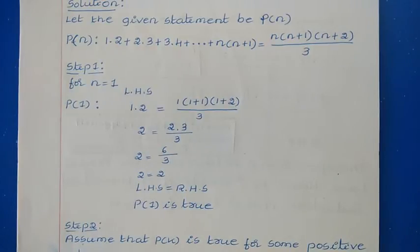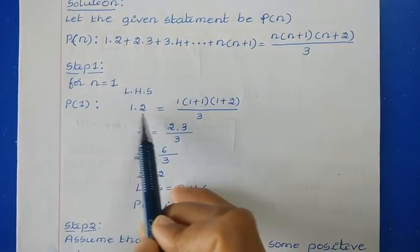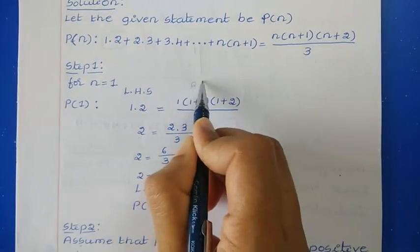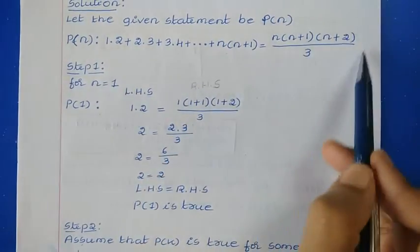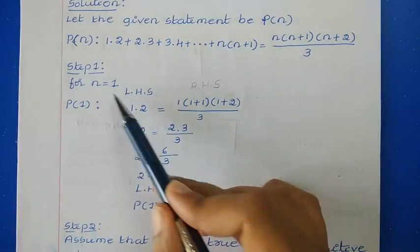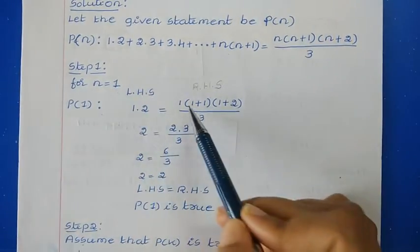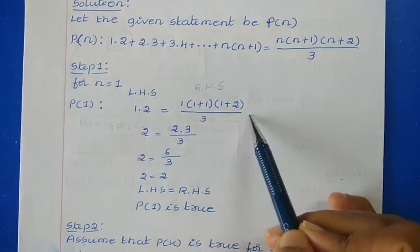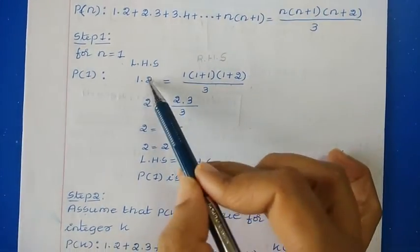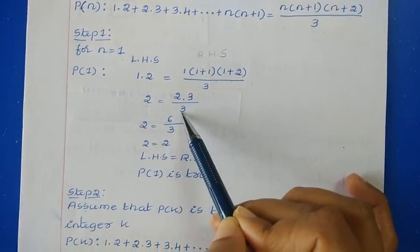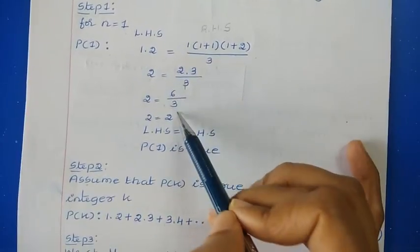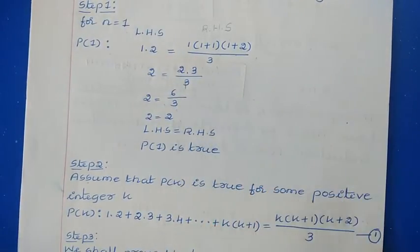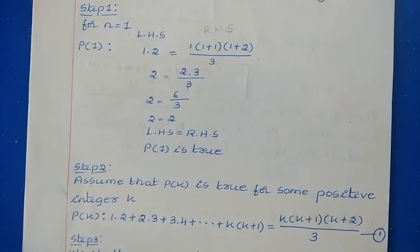The first step is to prove the statement for n=1, that is P(1). From the left-hand side, the first term is 1×2. From the right-hand side, replacing n with 1, we get 1×(1+1)×(1+2)/3 = 1×2×3/3 = 6/3 = 2. So 2 = 2, LHS equals RHS. We have proved the statement is true for n=1.